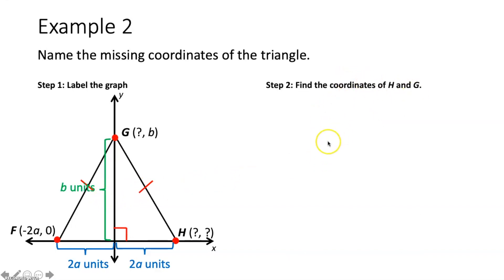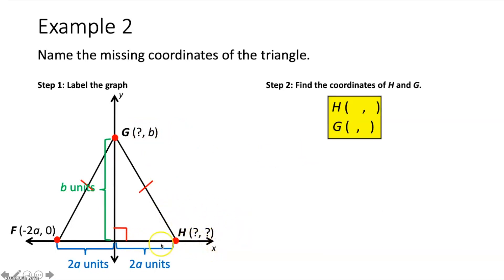We also have the Y coordinate for point G, which tells us how high up point G is on the Y axis — that distance from the origin to G is B units. Now we can find the coordinates: point H is on the X axis, two A units from the origin, so H is at two A comma zero. Point G is on the Y axis, so its X coordinate is zero, and since the Y coordinate is already given as B, point G is at zero comma B.